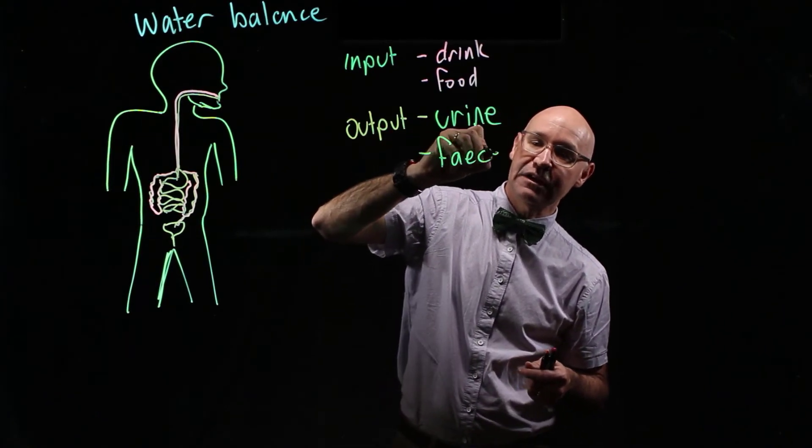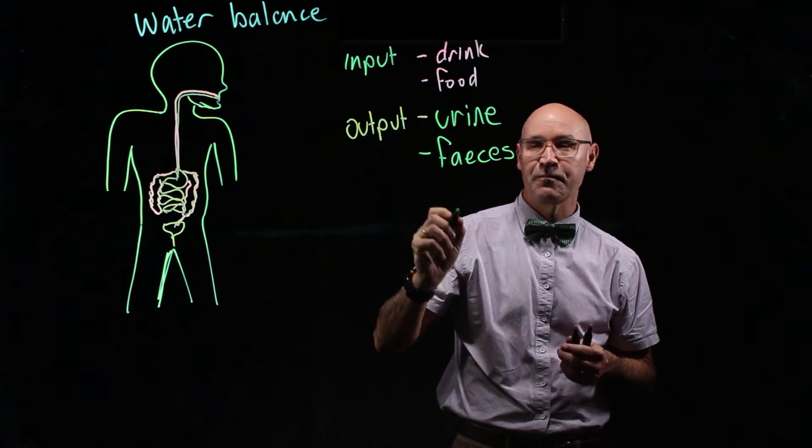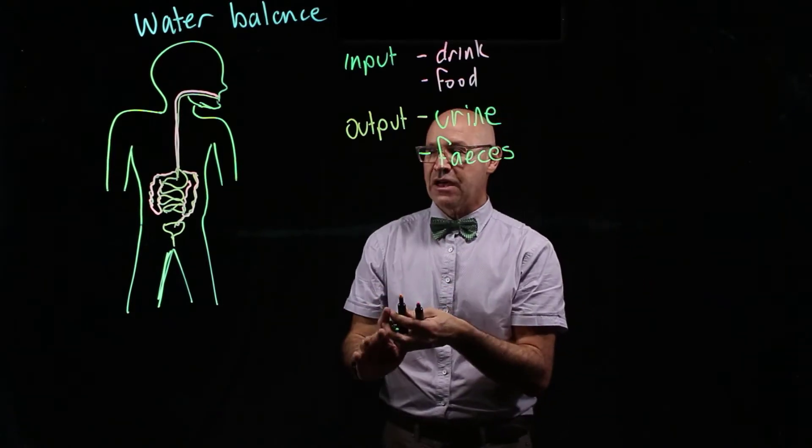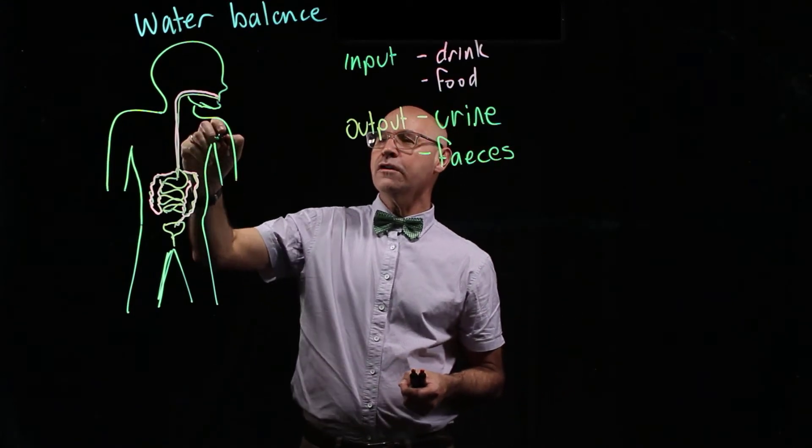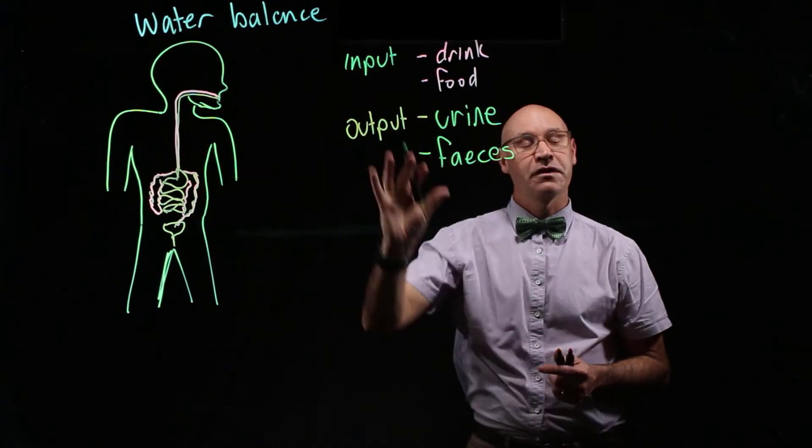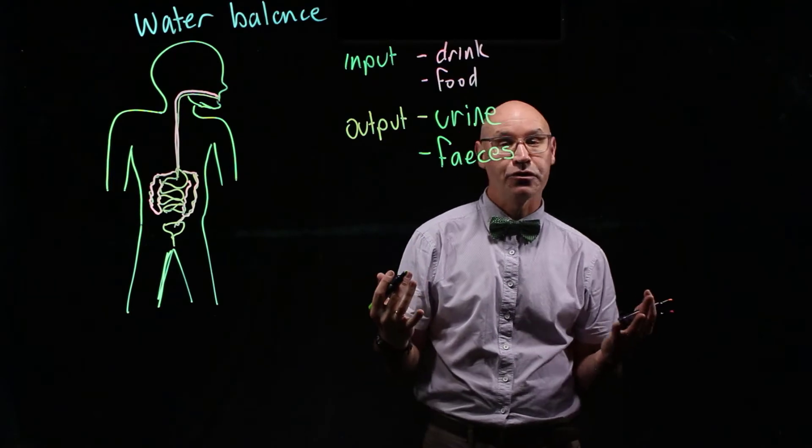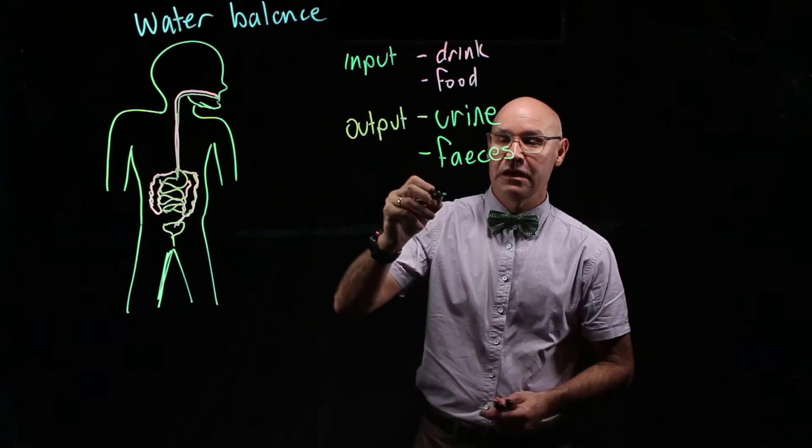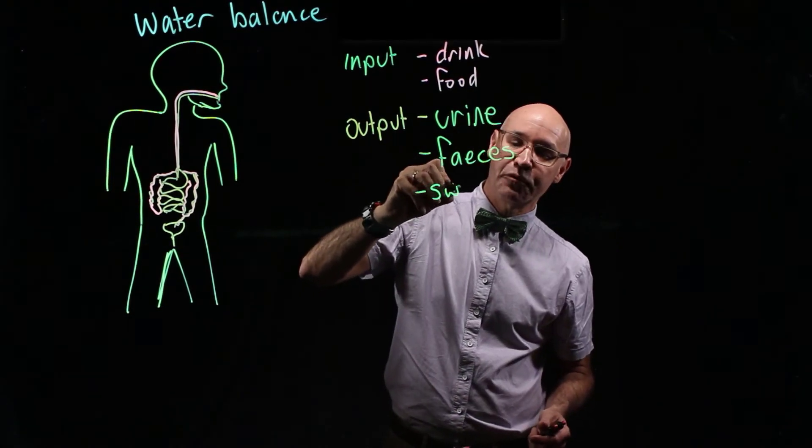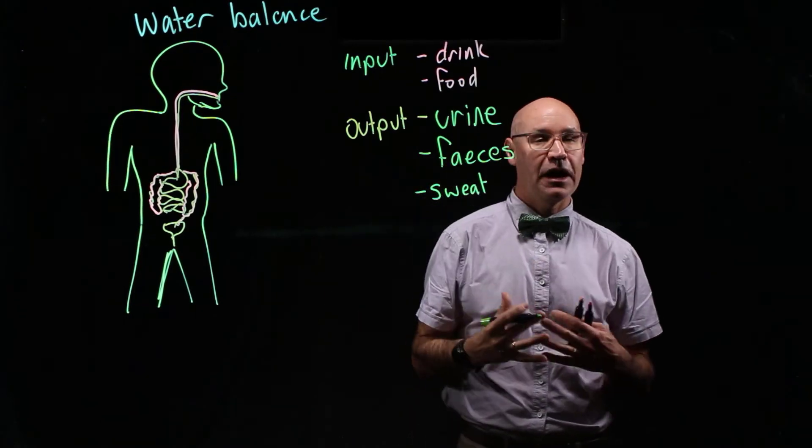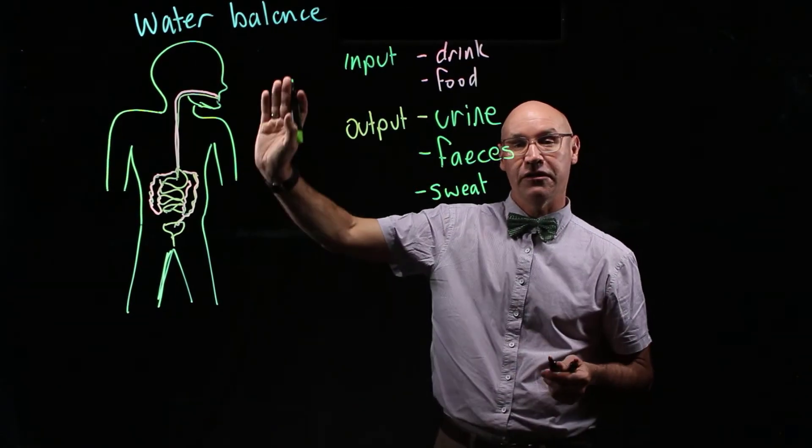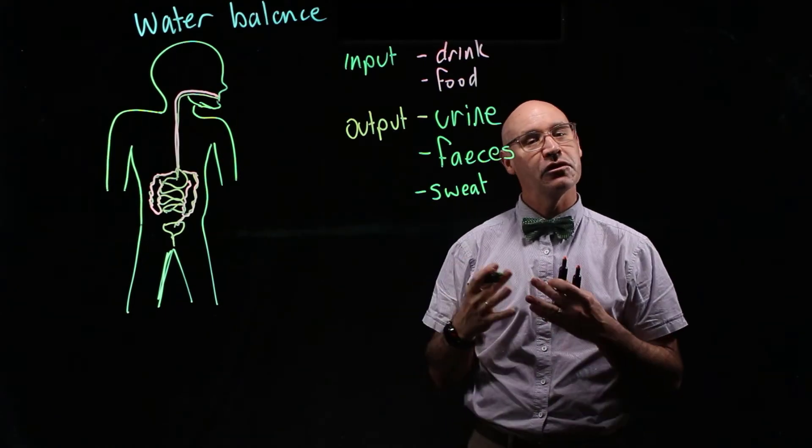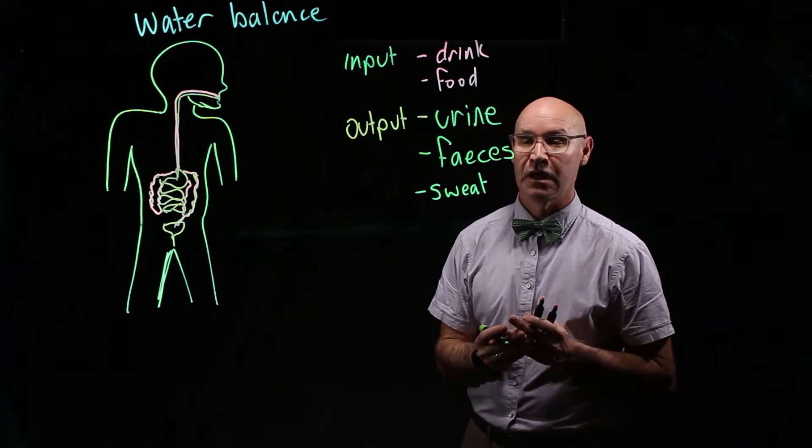Now there's actually two more as well. So whilst the skin is not involved in input, it is involved in output through sweat. So sweating or perspiration is another key way in which water is lost. Interestingly, perspiration is water loss but it's also the loss of salt as well, because of course sweat is salty.